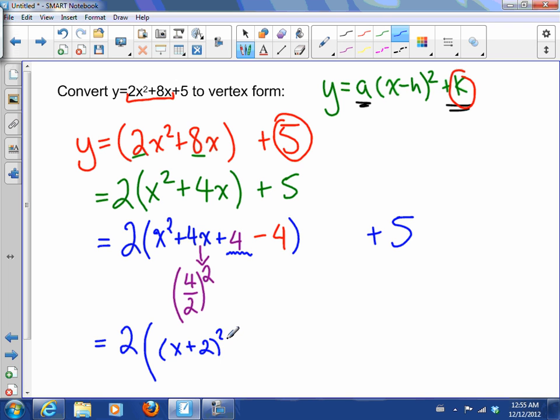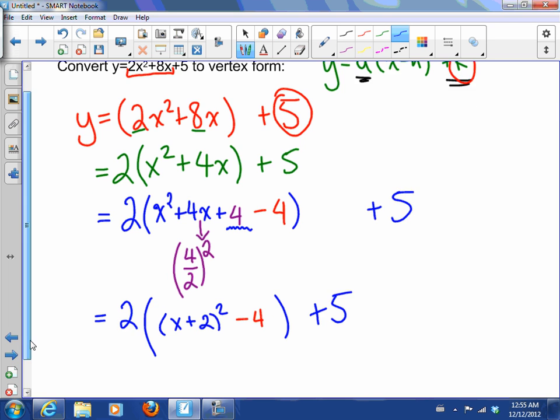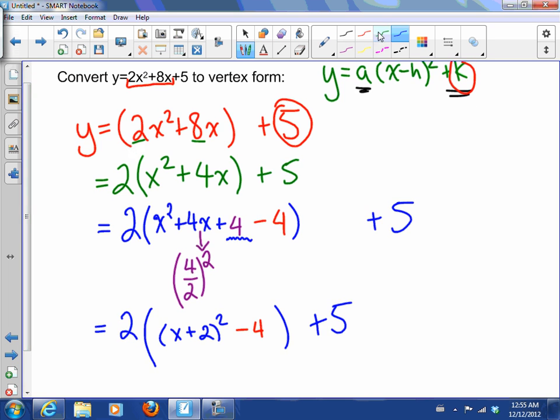Now I want this to be a perfect square. Notice that x² + 4x + 4 factors to a perfect square trinomial and it's actually (x + 2)², and here is my -4 + 5.